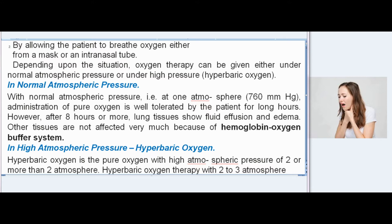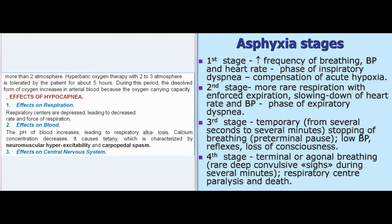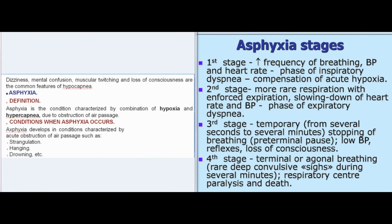Hyperbaric oxygen is pure oxygen at high atmospheric pressure of 2 or more atmospheres. Hyperbaric oxygen therapy with 2–3 atmospheres is tolerated for about 5 hours. Effects of hypocapnia include: respiratory centers being depressed, leading to decreased rate and force of respiration; blood pH increases, leading to respiratory alkalosis; calcium concentration decreases, causing tetany characterized by neuromuscular hyperexcitability and carpopedal spasm; and dizziness, mental confusion, muscular twitching, and loss of consciousness.